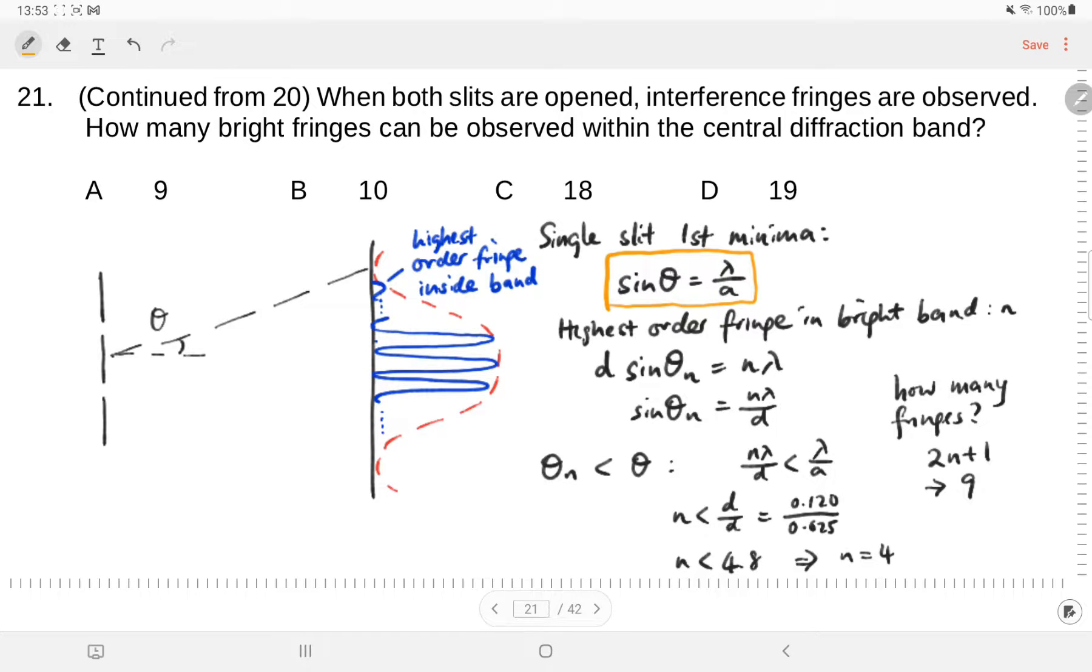This theta tells us the angular position of the minima. Then we go on and figure out how to express the angular position of the interference fringes of the nth order. Let us take the highest order of fringes that we can find in the central band and call it n. So n is the last one that we can see, which is this one - the nth order.